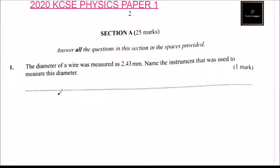The instrument that we used to measure small diameter in the physics laboratory is known as micrometer screw gauge.